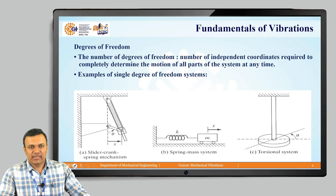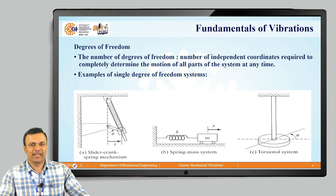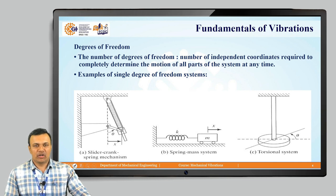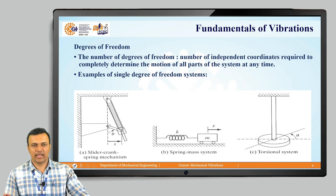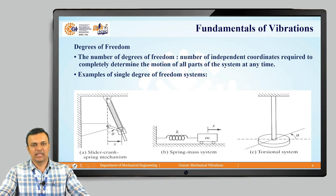An important term related to vibratory bodies is degrees of freedom. The number of degrees of freedom is defined as the number of independent coordinates required to completely determine the motion of all parts of the system at any point in time.